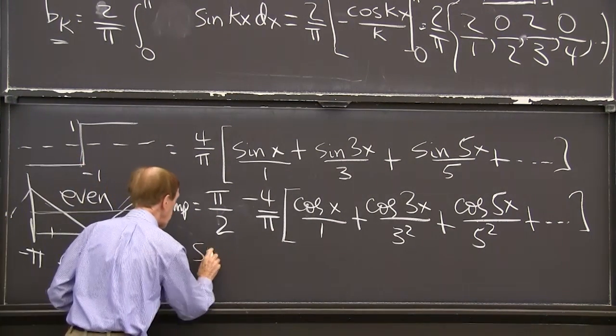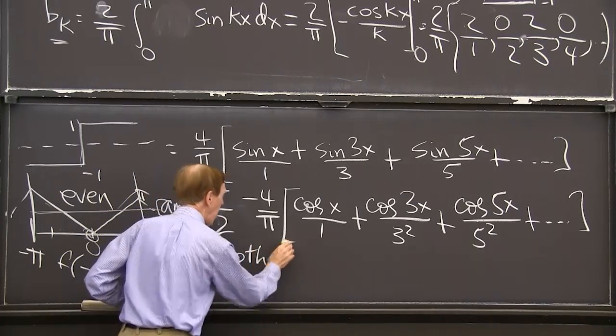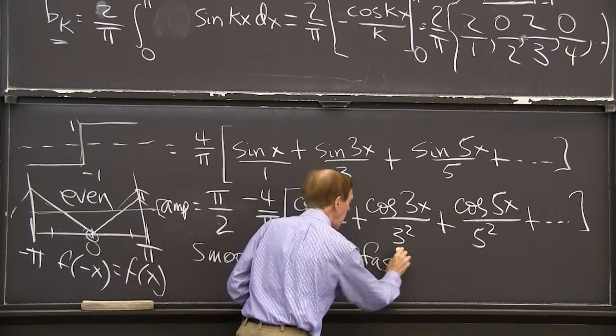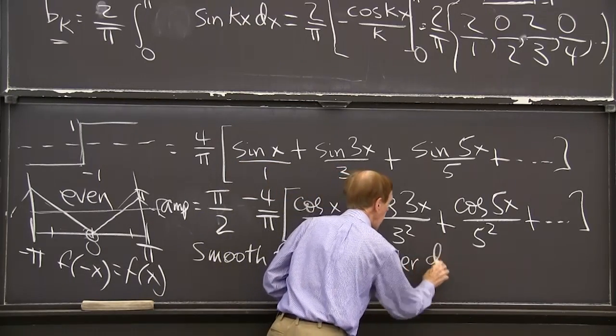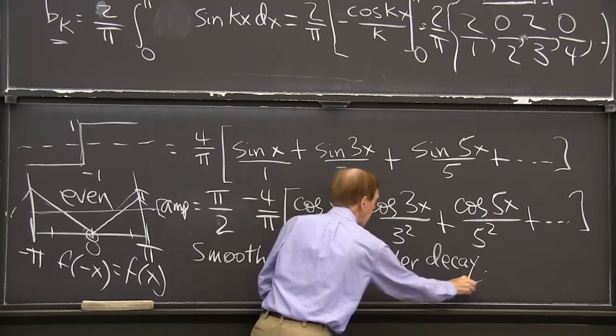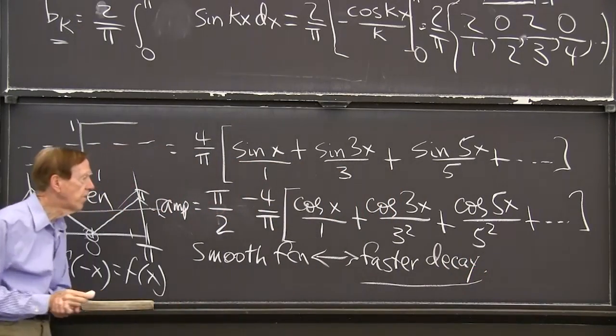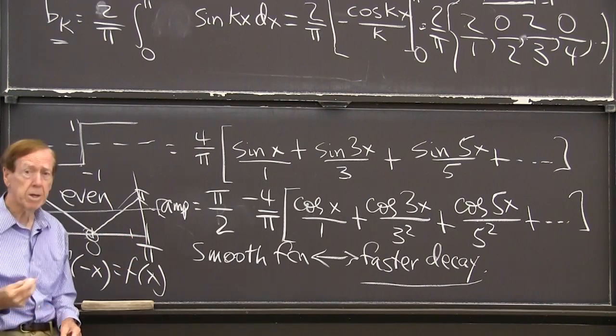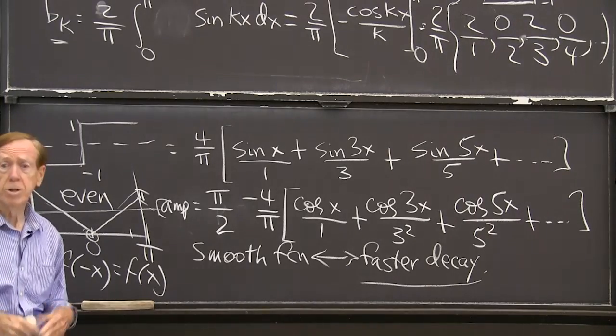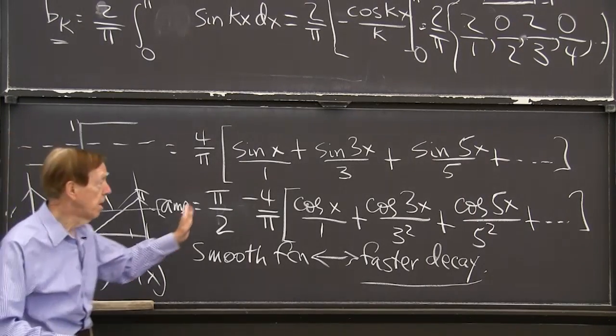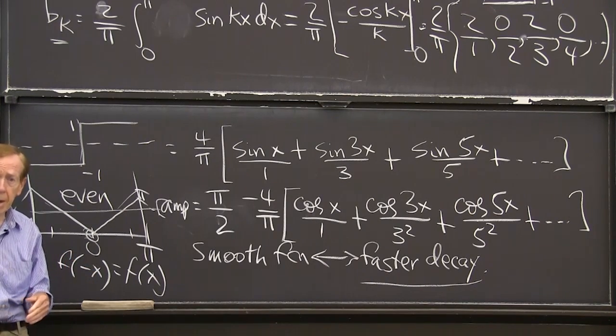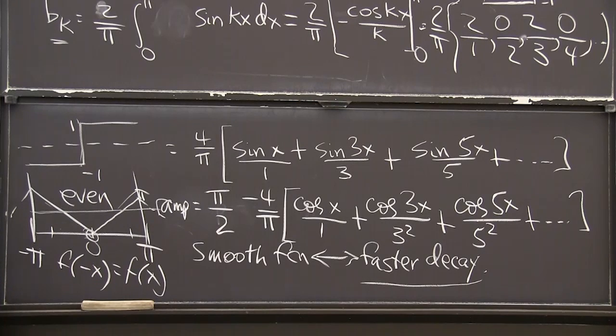Smooth, let me write those words. Smooth function connects with faster decay, faster drop off of the Fourier coefficient. It means that the Fourier series is much more useful. Fourier series is really terrific for functions that are smooth. Because then you only need to keep a few terms.